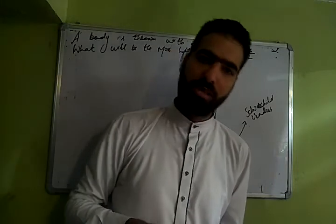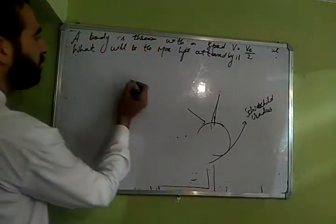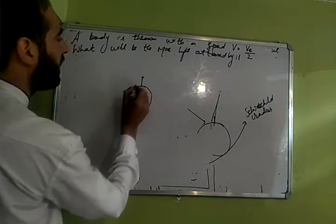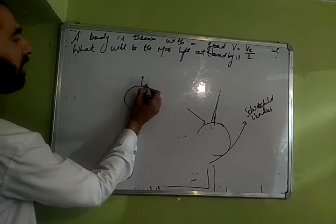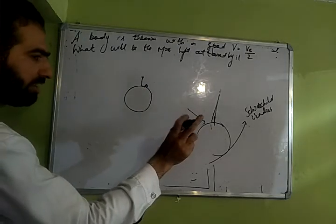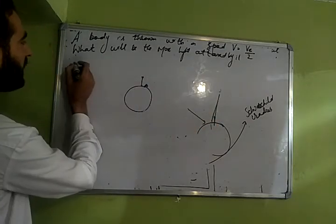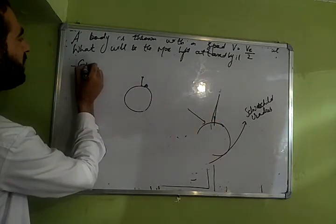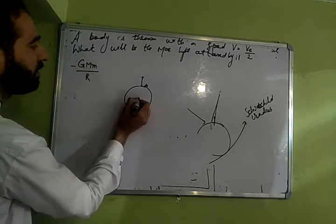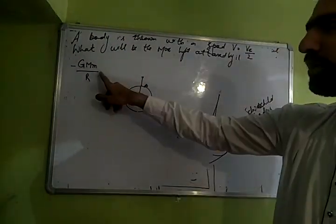So yaad rakhoge jab bhi aapko aisa question aayega you will apply law of conservation of mechanical energy. Batao near the surface of the earth, maan lo humne phenka is ko. Thik hai. Batao pehle jab point A tha on the surface of earth, what was sum of potential energy and kinetic energy? It will remain constant. What is the potential energy at point A? Yes, minus g capital M small m divided by r. Isn't it? You know on the surface between object and the earth there is this the potential energy.